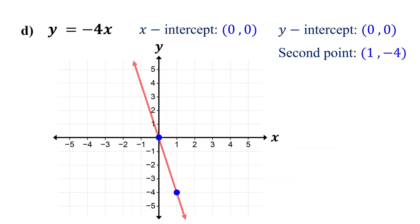By the way, the most straightforward method to graph linear equations in slope-intercept form, like this example and the previous one, is by using the slope and y-intercepts. Check out the link in the description.